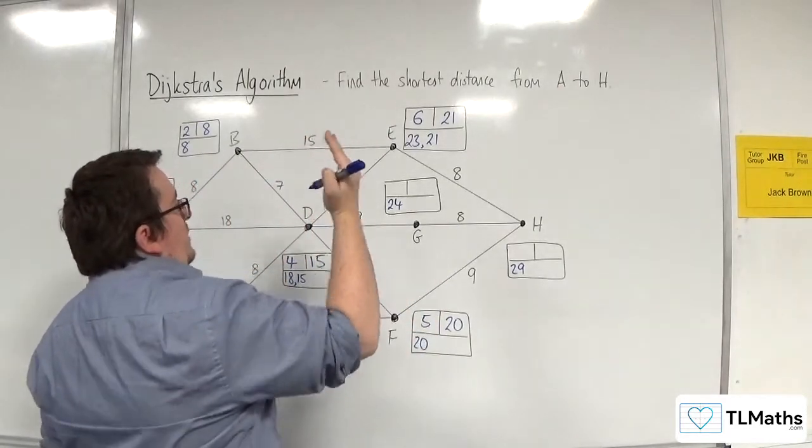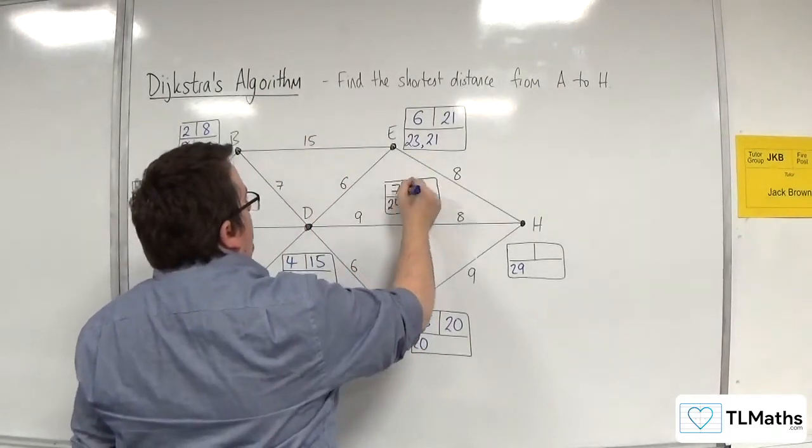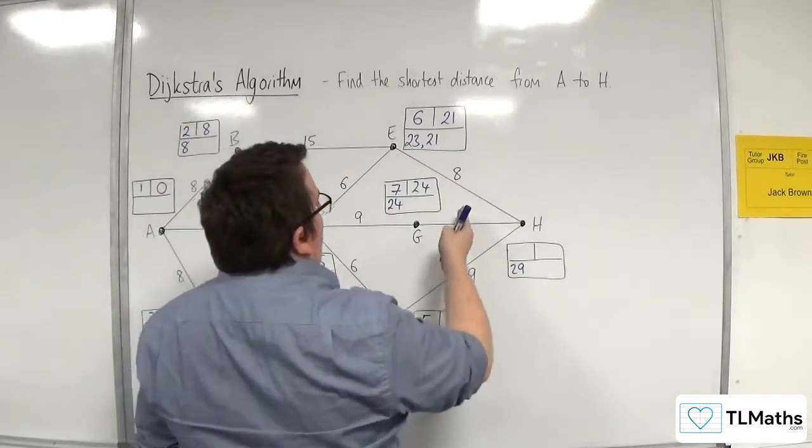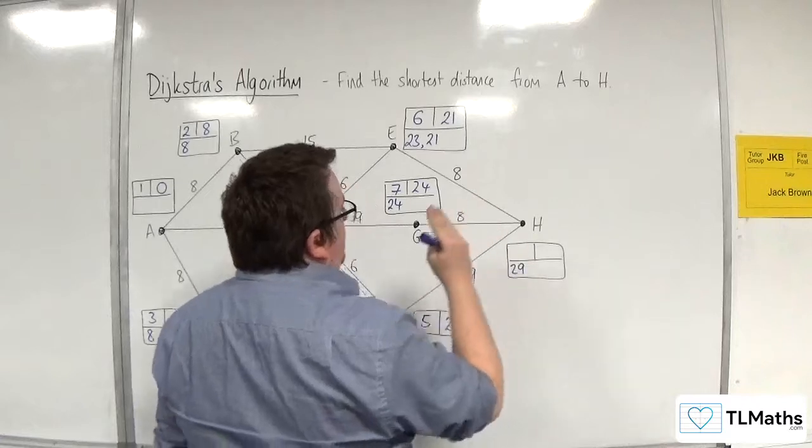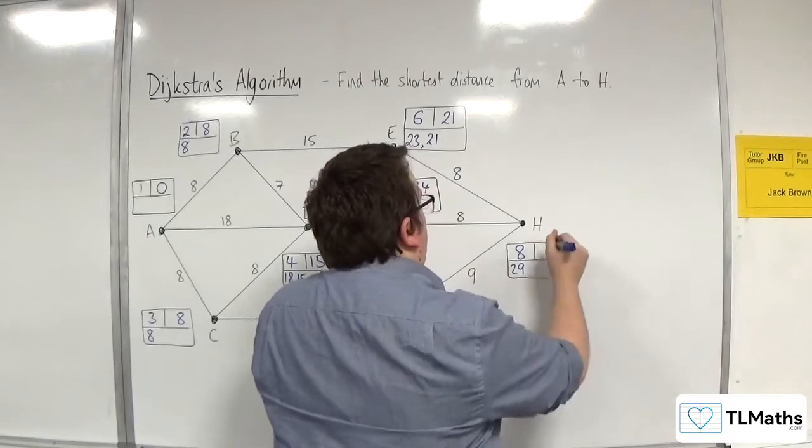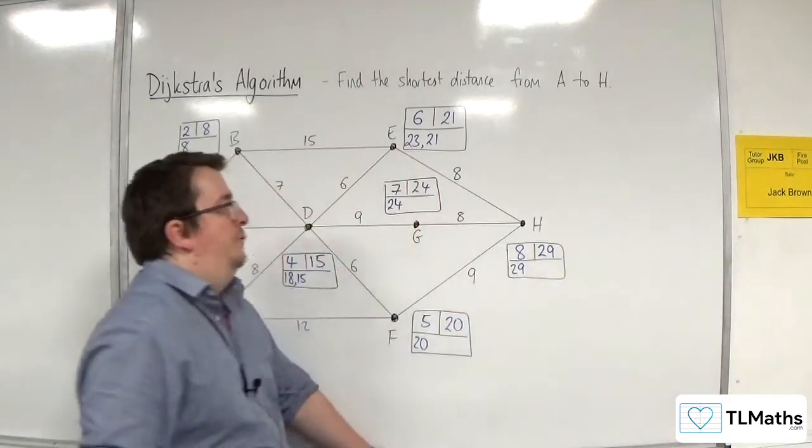So the next one to get picked will be G, so 7, 24 goes in the final value box. 24 plus 8 is 32, which isn't better than 29. And then finally 8 goes in there, and 29 as the final value.